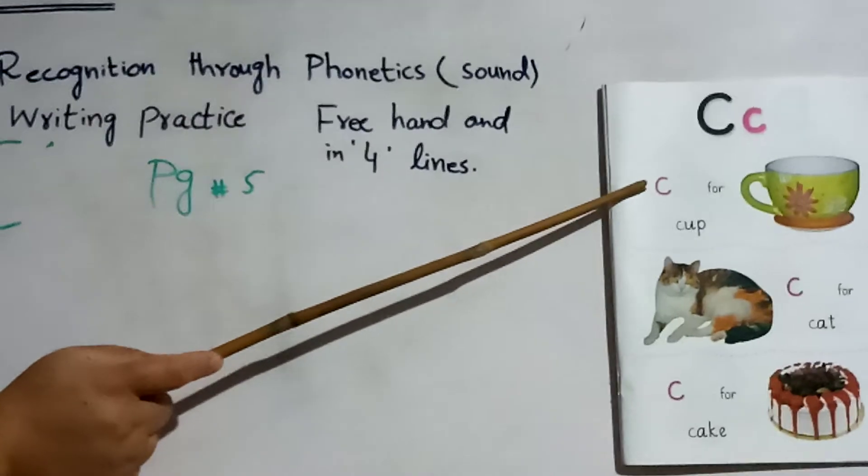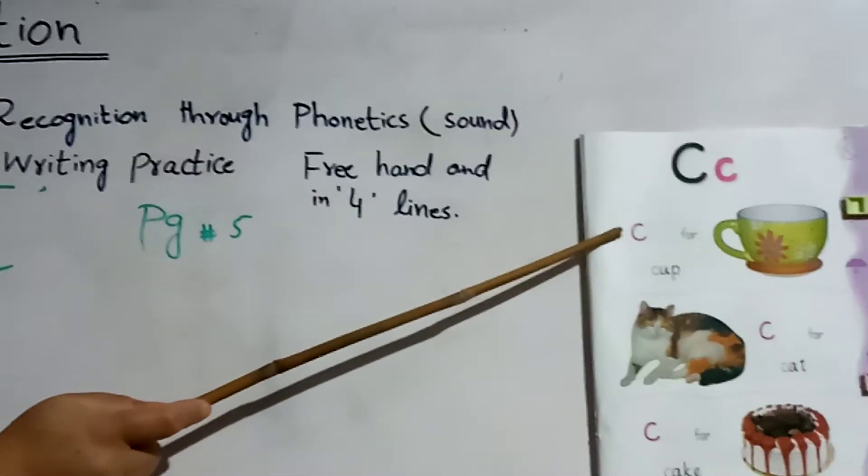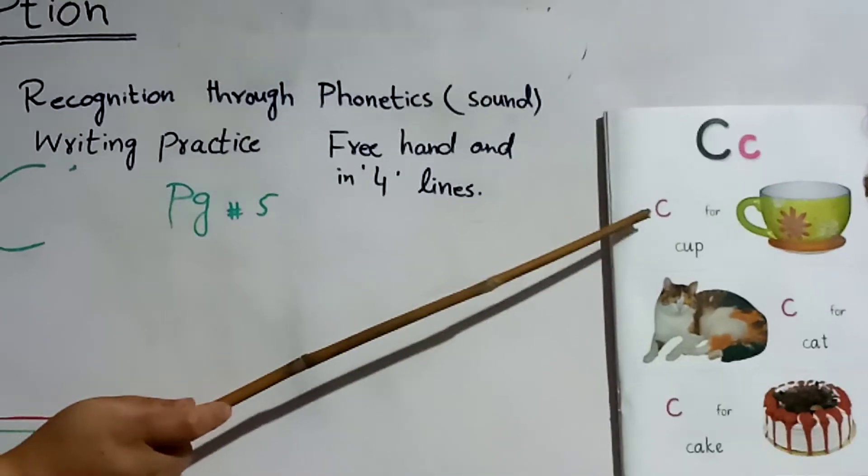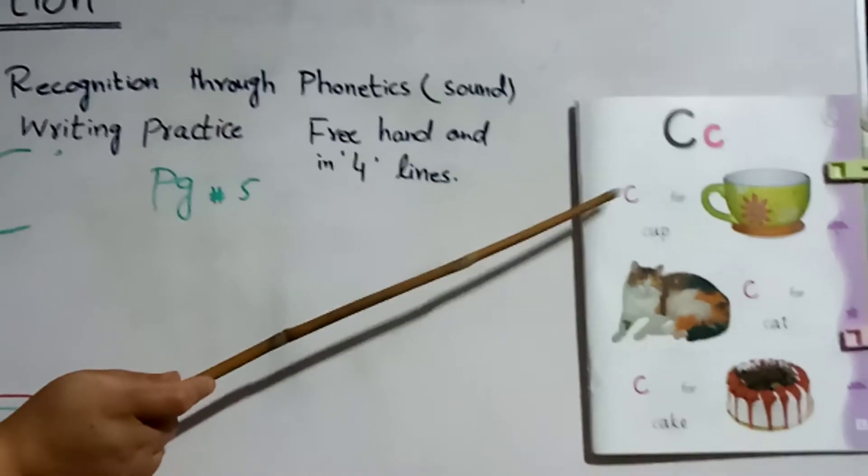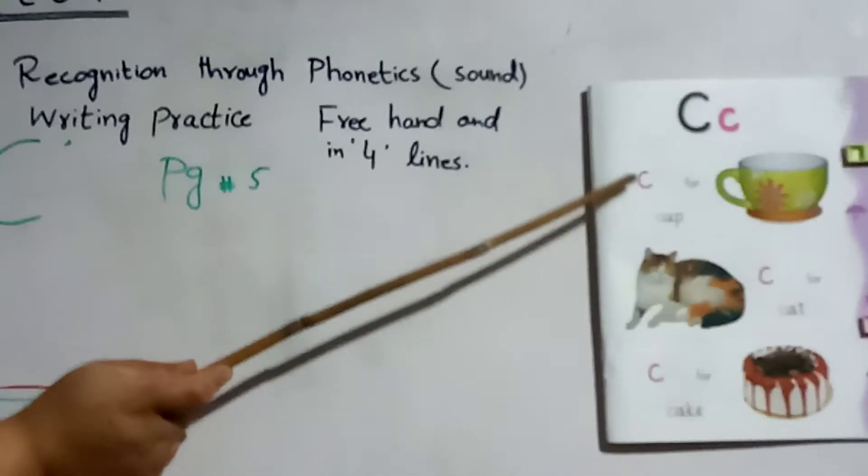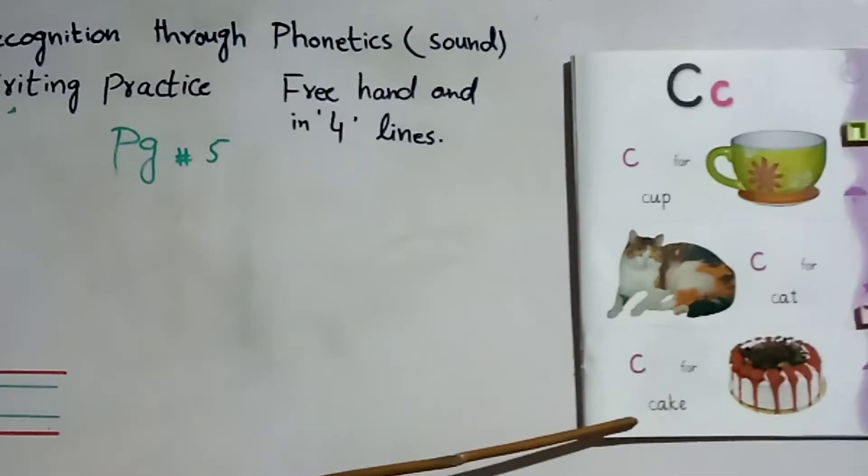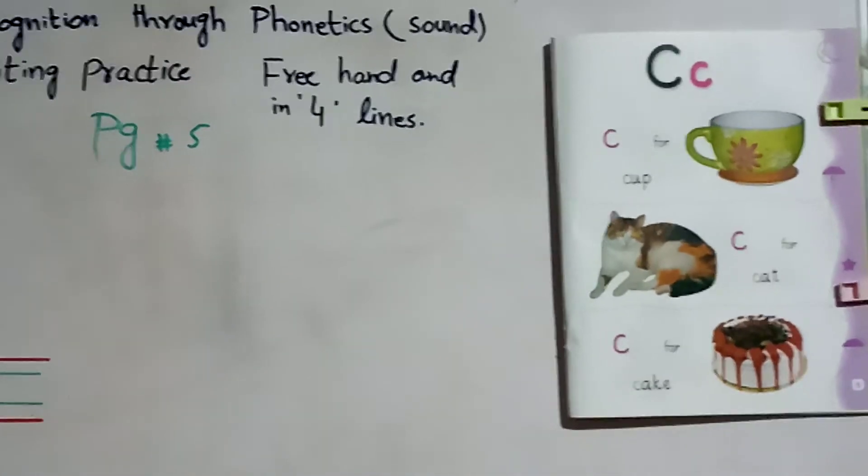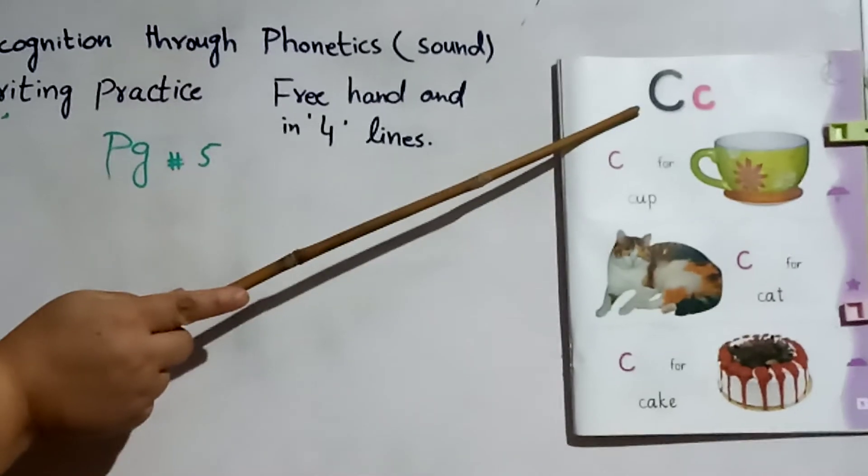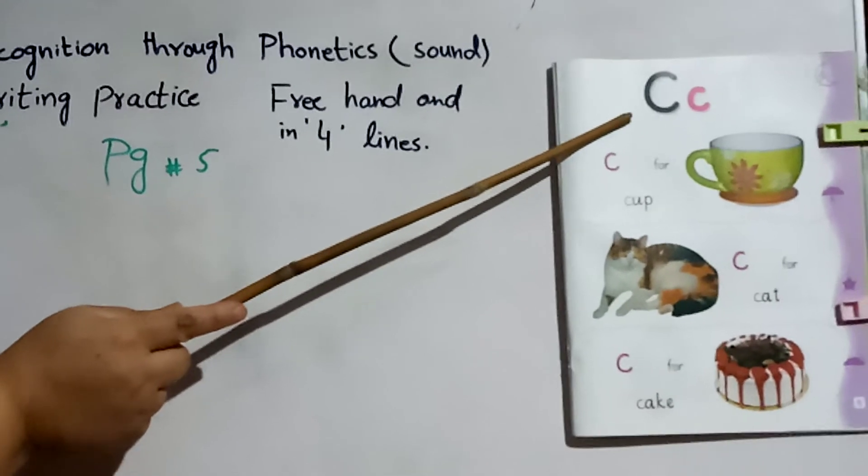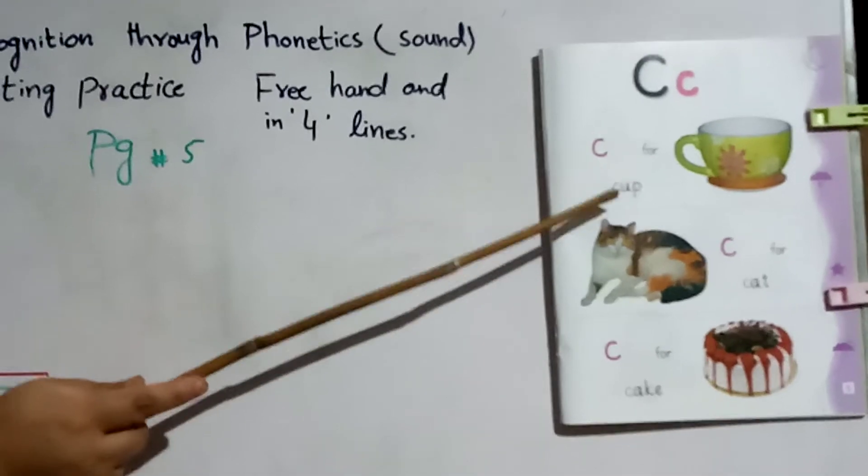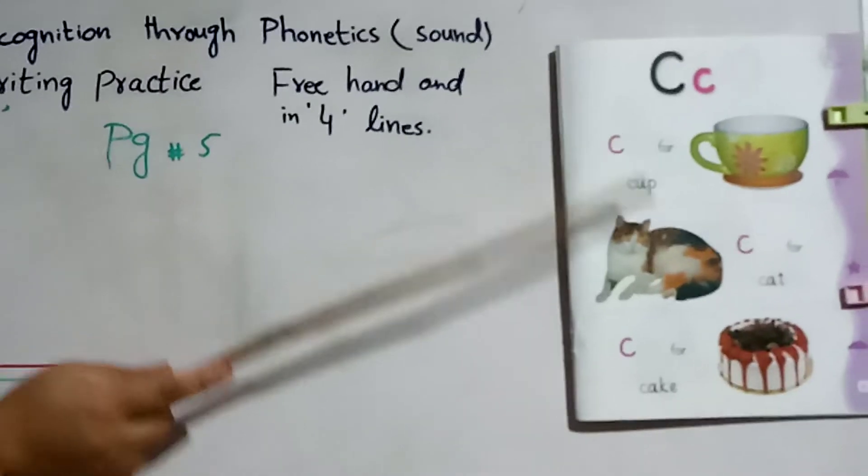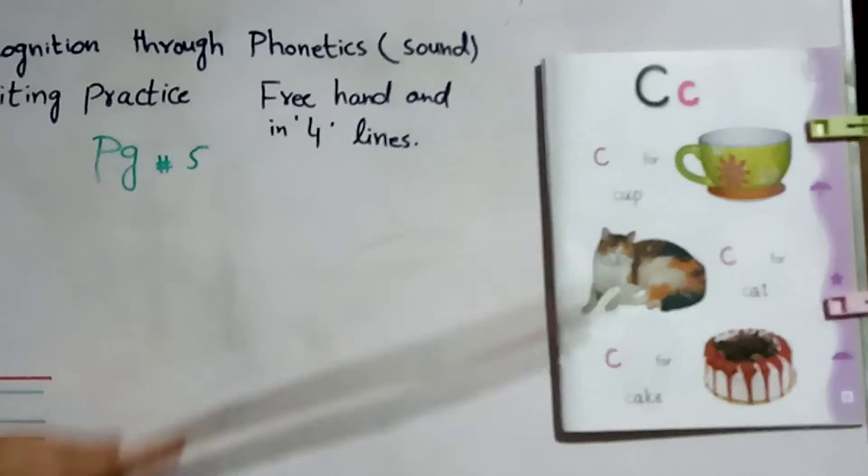You have letter C. C cup, C cat, C cake. Read it with me. Listen to the phonetic carefully. C. Its sound is C. C cup, C cat, C cake.